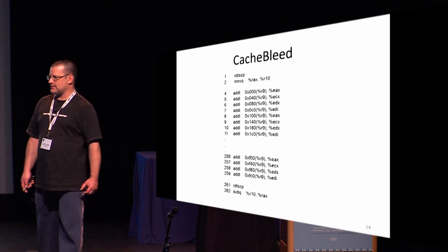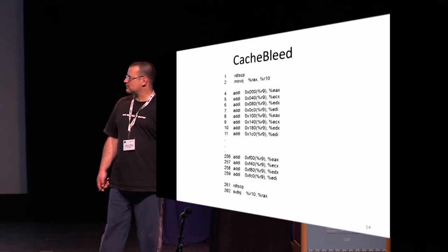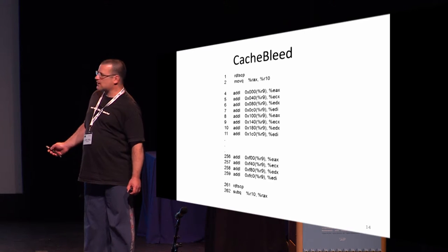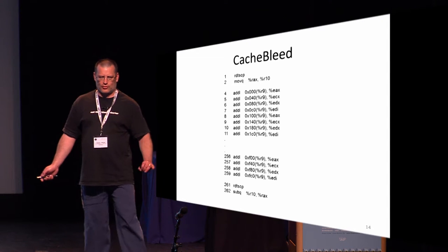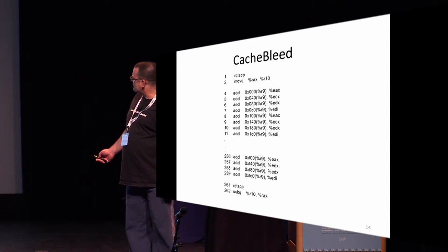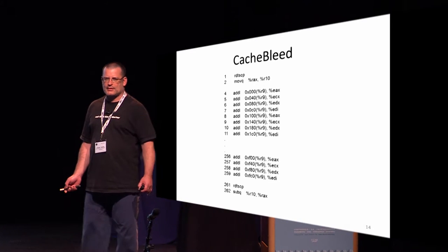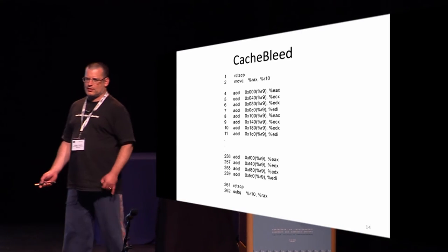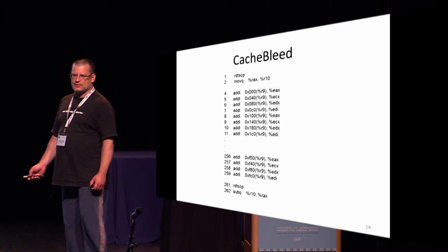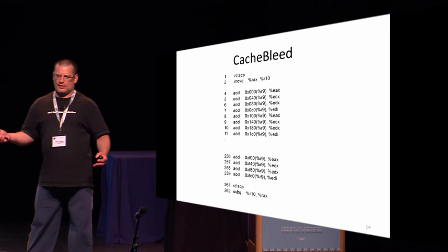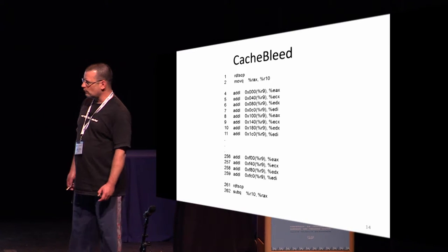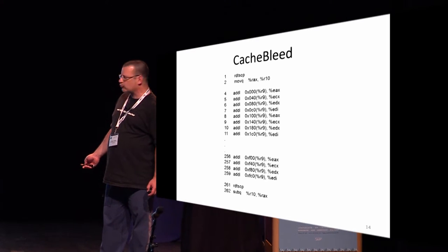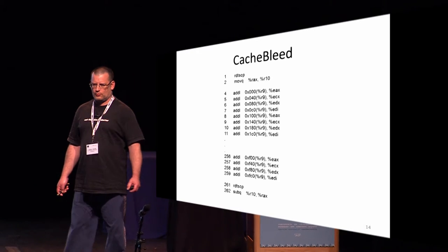What we did is basically an attack we call Cache Bleed — thanks to Dan Bernstein for the name. We first take the time, put it in a location, and then go and access memory locations spaced by 0x40 bytes, which is 64 — exactly the size of a cache line. We add them to various registers, doing as many cache accesses as we can. The register R9's offset tells us which cache bank we access. At the end of these 256 accesses, we take the timer again, subtract from the previous timer, and get how long this operation took.